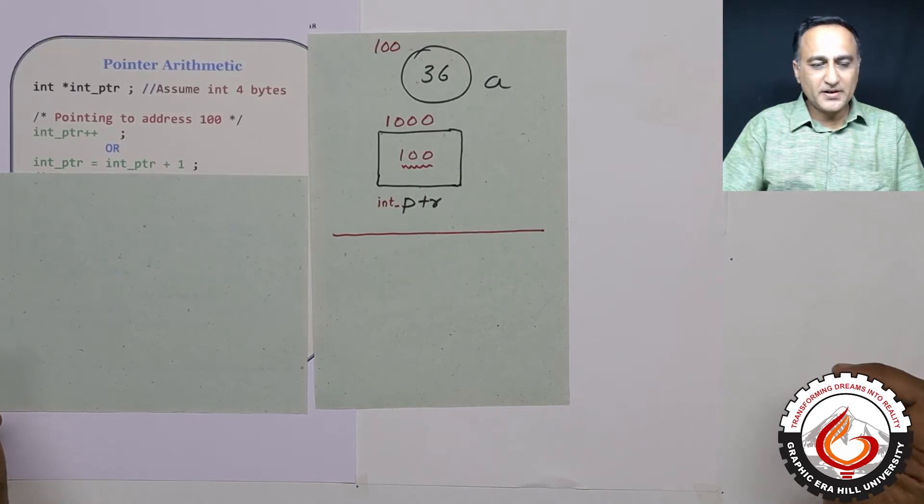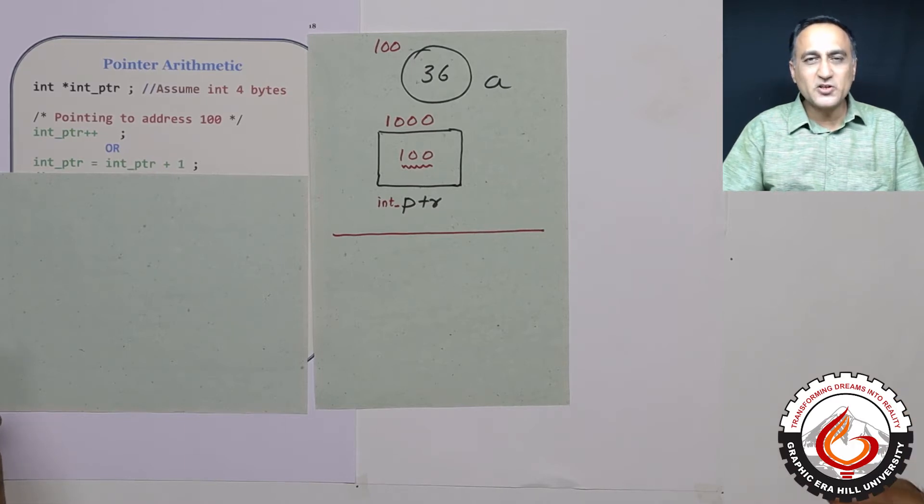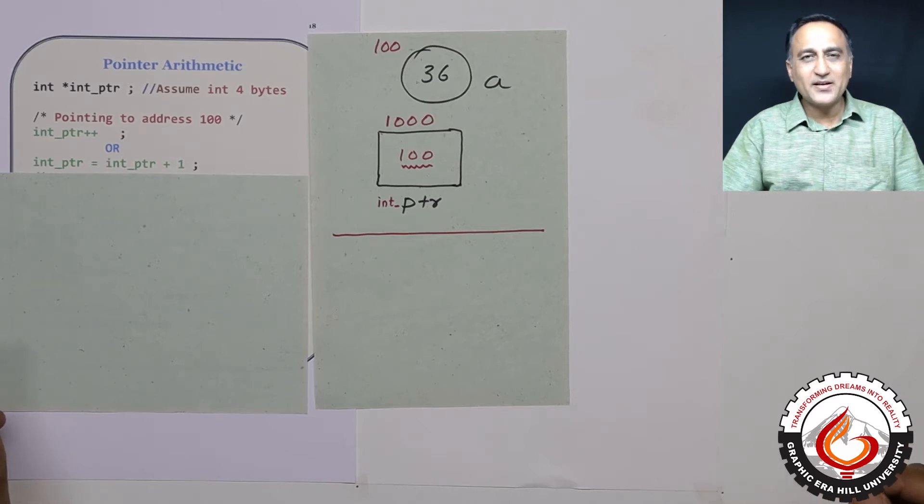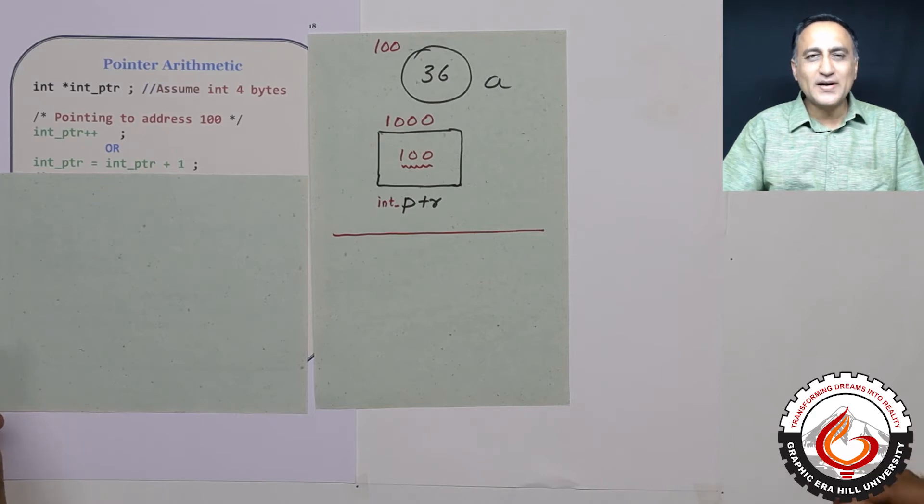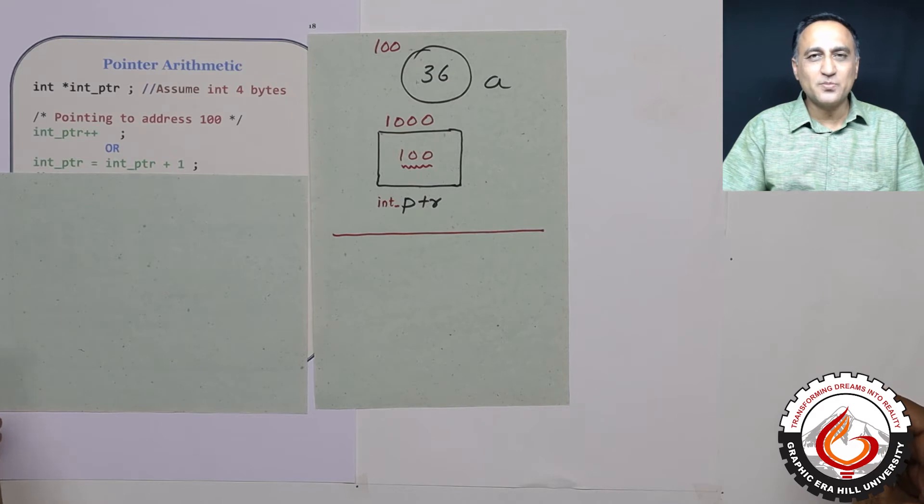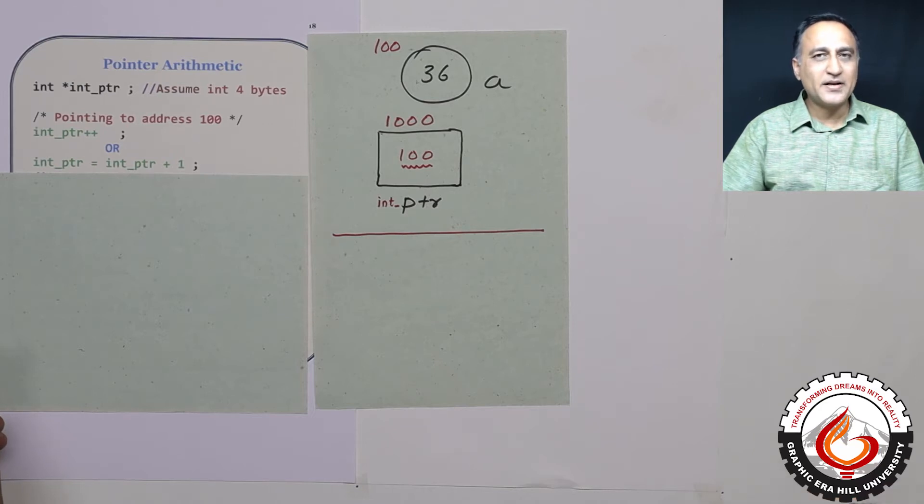The discussion now shall be on pointer arithmetic. Just as you can add and subtract integer values or floating point values, similarly you can add and subtract pointer variables. Because pointers also contain addresses, you can add and subtract addresses. Let's try to understand why this addition and subtraction of addresses is important. Because when you come to arrays in the subsequent videos, you need to understand pointer arithmetic very well to have complete conceptual clarity.